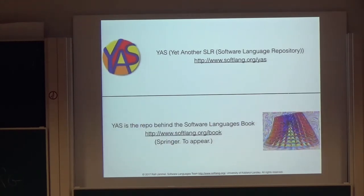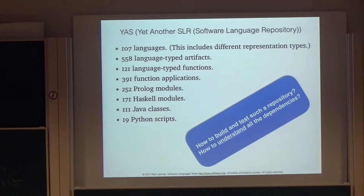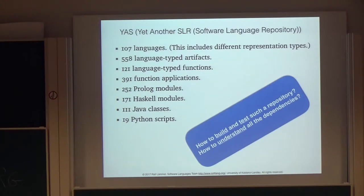YAS is basically a software language repository. It contains lots of language definitions, transformations, grammars, semantics, components, and sample artifacts. It's not super big because it's basically just everything needed for my software language work. There's all kinds of Haskell code, Java, Python, and protocol code, plus lots of artifacts, domain-specific annotations, grammar annotations, and sample programs in many languages. There are about 107 languages and over 500 language-type artifacts in the repository, all related by transformation relationships or otherwise.